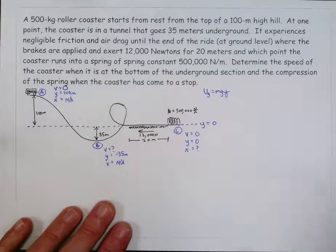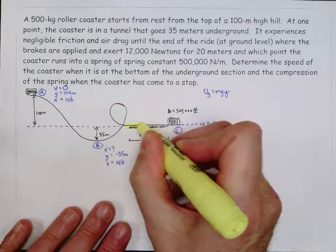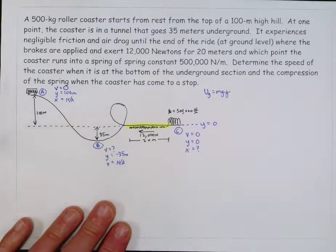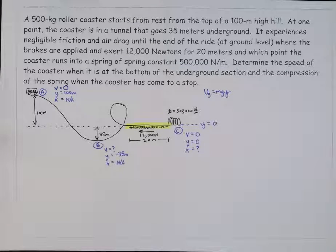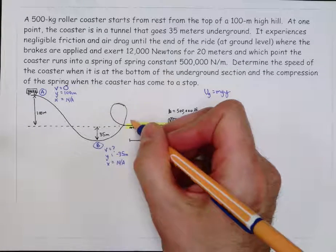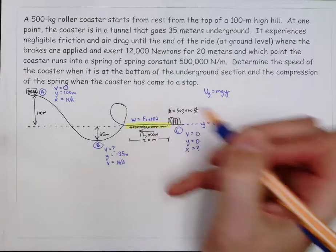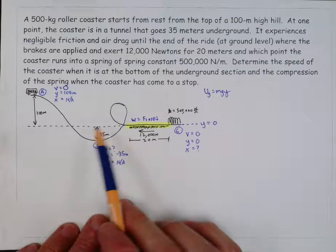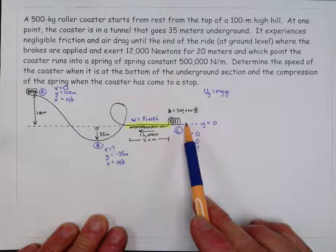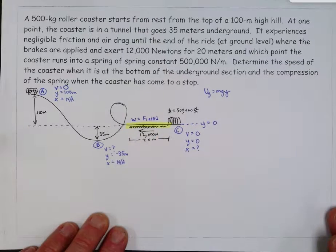What I like to do is I like to highlight sections of the problem, like right here. Right in that section, we have a force other than gravity or a spring that's doing work. So we should remind ourselves that in that section, we have to calculate f cosine theta d. Anytime we move from before that section to after that section, we're going to have to put that into our formula.